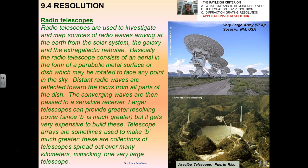Radio telescopes, really excellent application. Radio telescopes use waves in the radio part of the spectrum, and I mean specifically what they do is they map sources of radio waves arriving at the earth from the solar system. We'll study this a little more when we talk about astrophysics. The radio telescope is made up of an aerial in the form of a parabolic metal surface and it can be rotated to face any point in the sky. So distant radio waves are reflected towards the focus from all parts of the dish, and the converging waves are then passed to a sensitive receiver. Larger telescopes can provide greater resolving power, so the size of the telescope actually equates to lowercase b in the equation before, but it's too expensive to build these.